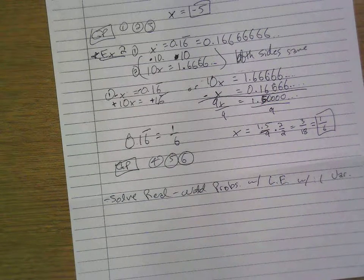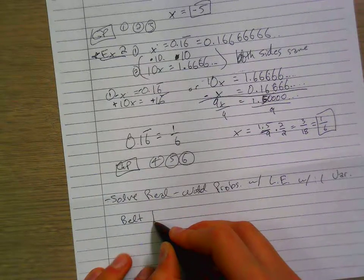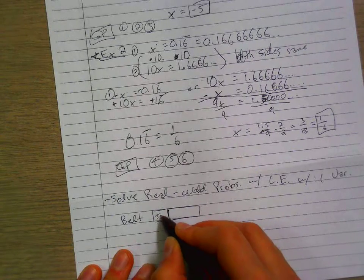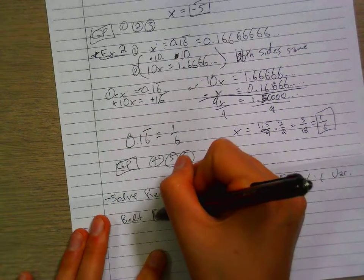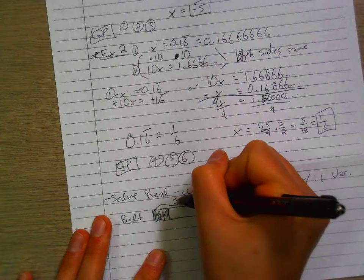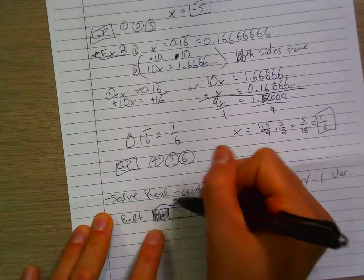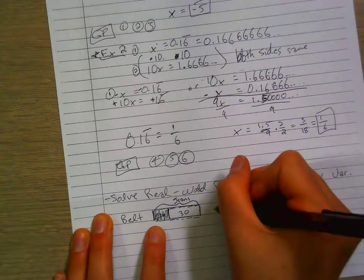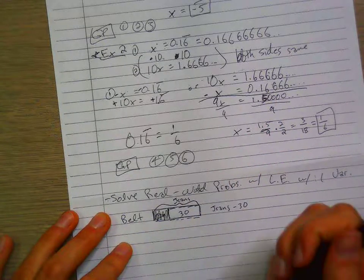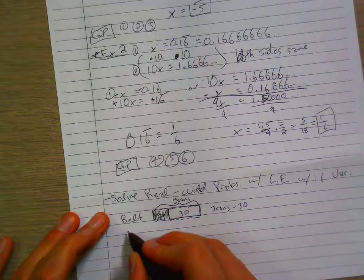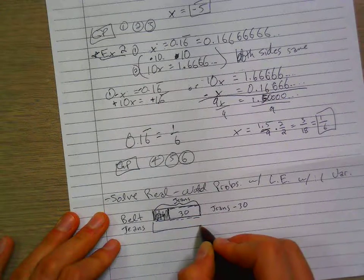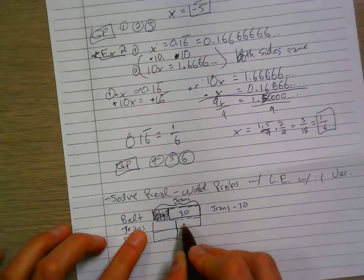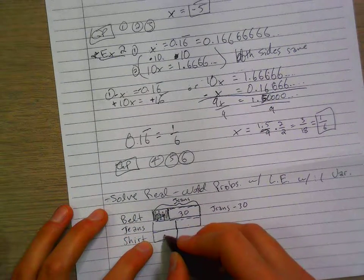Here, a belt costs $30 less than a pair of jeans. So as you read the problem, write out the expression. So a belt itself is going to be whatever jeans is. A belt will be this portion of the box. So if this whole thing is jeans, then the belt will be the whole thing minus 30. So the belt is jeans minus 30. The ratio of the cost of jeans to the cost of a shirt is 2 to 1. So if we say jeans is this amount, then we would have to say that shirt is this amount.